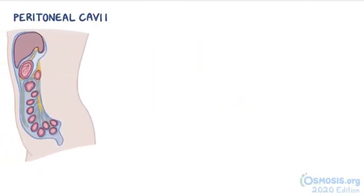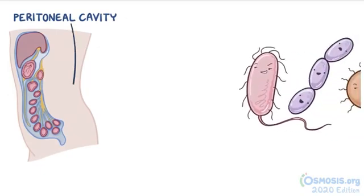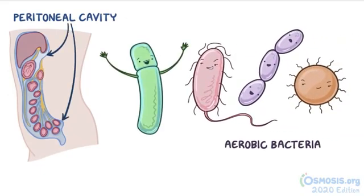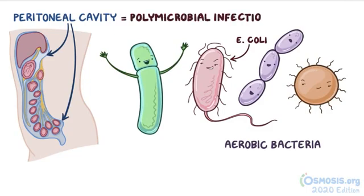Alternatively, it can slip into the sterile peritoneal cavity, accompanied by aerobic bacteria like E. coli, which are also part of the normal gut flora. So, peritoneal infections are usually considered a polymicrobial infection, to reflect that there's more than one culprit.